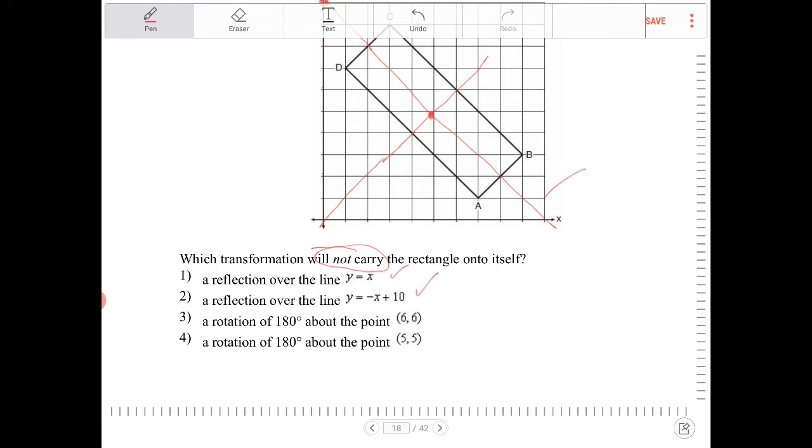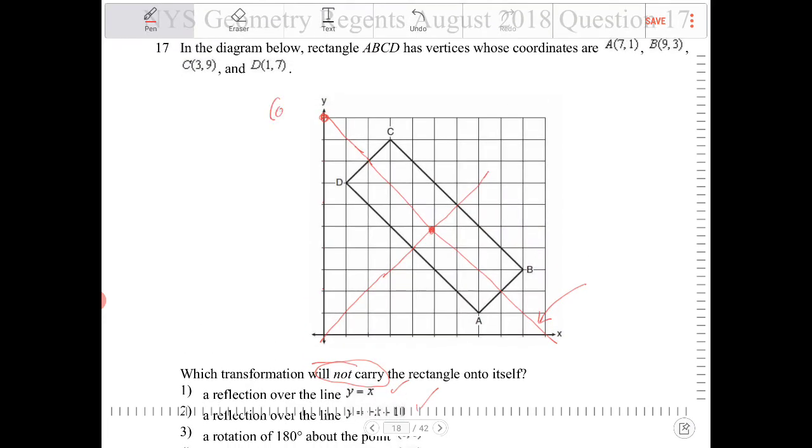Again, the slope of this line here, we're going down one and over one. And the y-intercept is zero comma ten. So yes, the equation of this line is y equals negative x plus 10. And the equation for this line is y equals x.